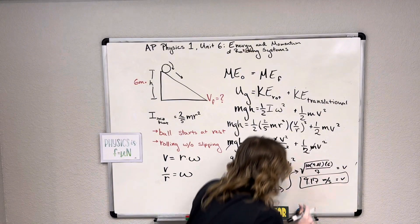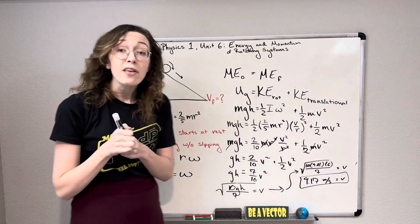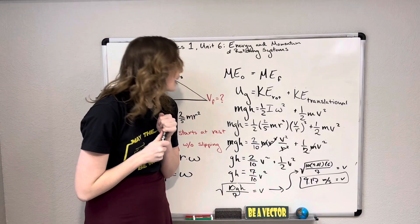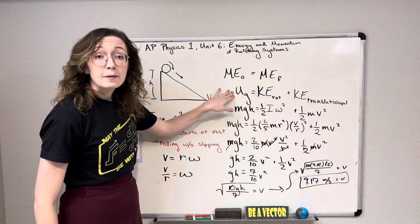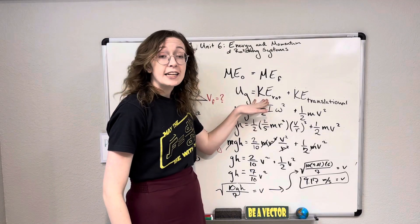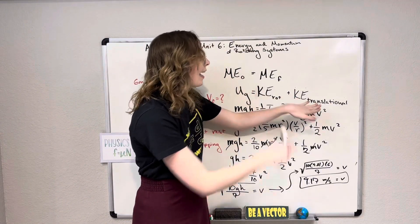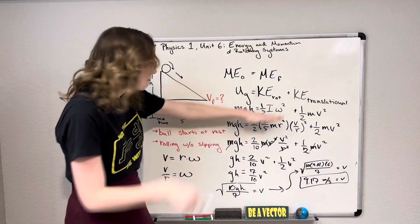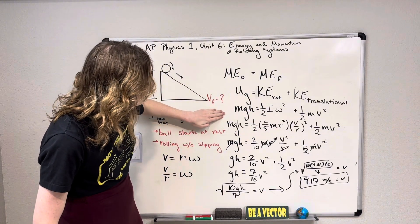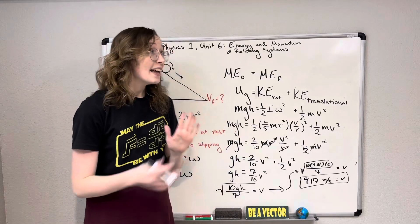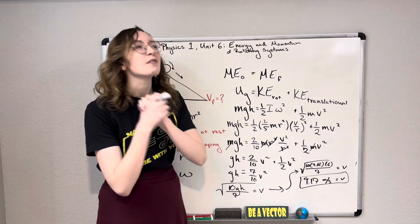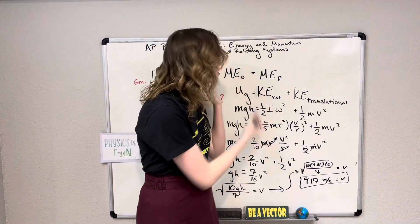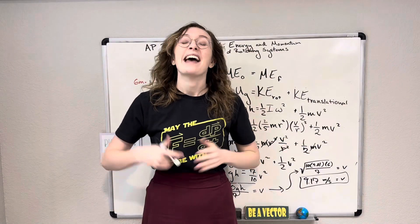That was quite a lot of algebra, but all we did was apply conservation of mechanical energy. No friction meant we could use it directly. At the start: potential energy due to gravity. At the end: both translational and rotational kinetic energy. We plugged in expressions, simplified, and solved for v. Thank you so much — I hope you have a lovely day, and happy physicsing!